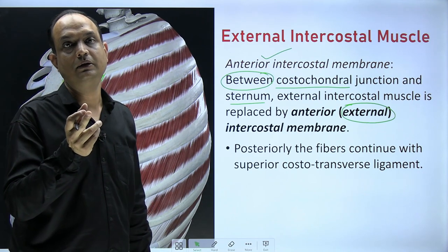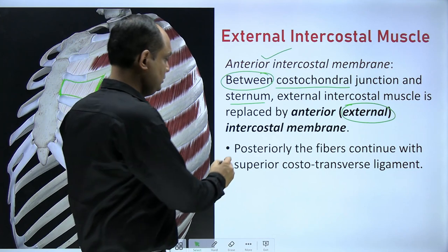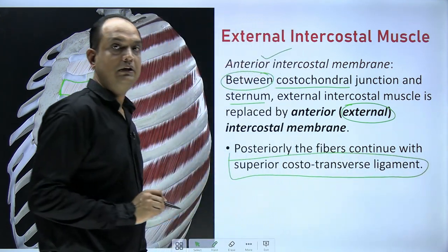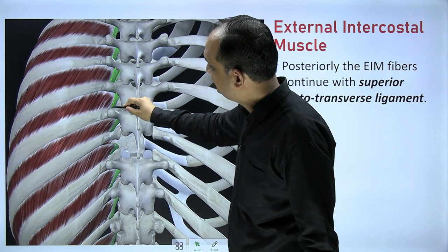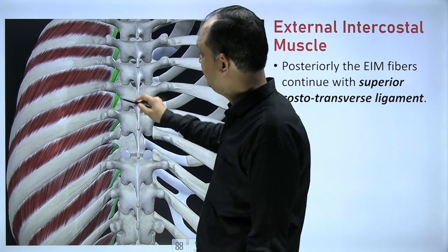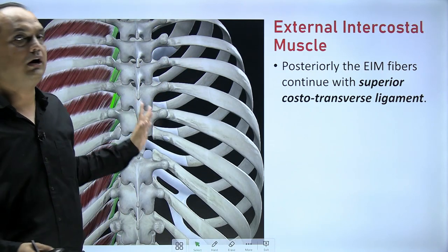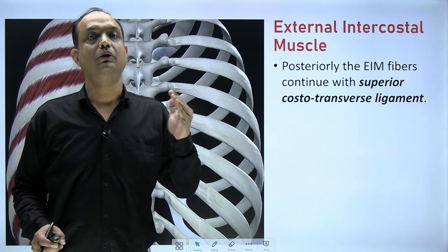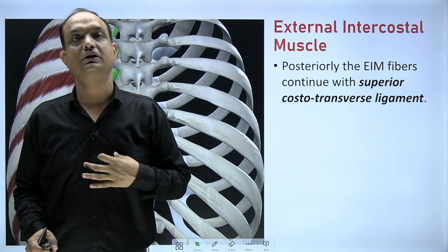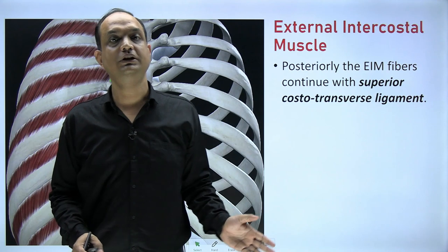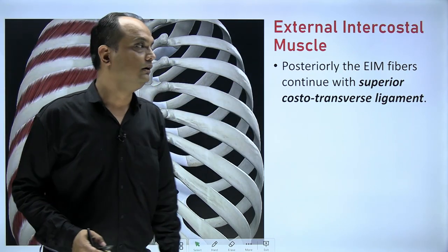The posterior free border of the external intercostal muscle merges with a ligament known as the superior costotransverse ligament. You can see the superior costotransverse ligament represented as green bands in the image, receiving the attachment of the posterior free border of the external intercostal muscle. So anteriorly the external intercostal is replaced by membrane, and posteriorly its free border merges with the superior costotransverse ligament.